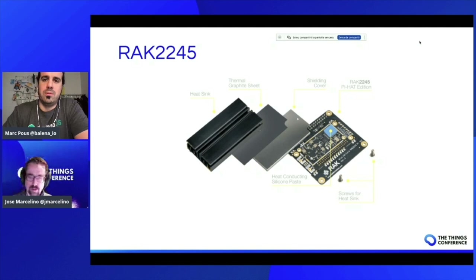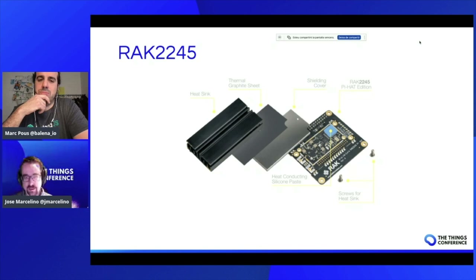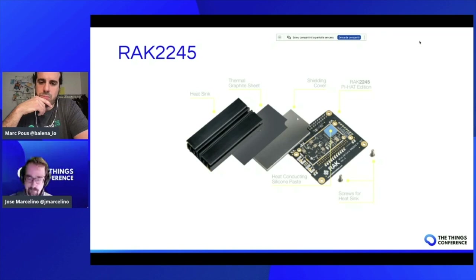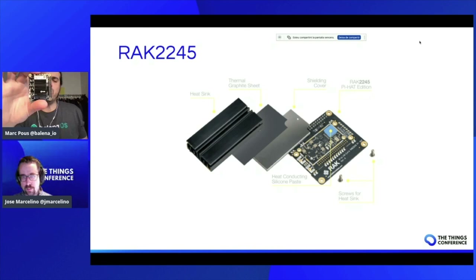Yes, sure. The RAK 2245 Concentrator is a full LoRa gateway — it handles eight channels, meaning eight different frequencies of LoRa. You can be sending with many, many devices at the same time, because it not only does the eight frequencies but also different spreading factors on each frequency, so the combinations are massive. It's very small, fits perfectly on a Raspberry Pi. You just connect an antenna and off you go.